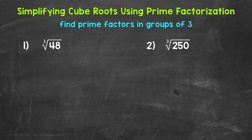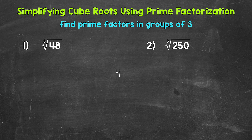Let's move on to simplifying cube roots using prime factorization. Here are our examples — these are the same exact ones we just did, but let's take a different approach. Let's jump into number 1, where we have the cube root of 48. We're going to use the prime factorization of 48 to pull out any cube roots of perfect cubes. There are different paths to take to get to the prime factors, but no matter what path you take, you'll get to the same prime factors.